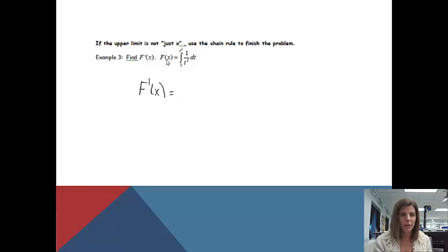So to get f prime of x, remember when I take the derivative of both sides, the derivative and the integral just cancel each other out. I'll just end up getting 1 over. Instead of t, we write that upper variable, which happens to be x cubed. So it's going to be x cubed squared. And now the way I'm going to finish this problem is times the derivative of the x cubed. The derivative of the x cubed will be 3x squared. And I'm going to put that over 1.